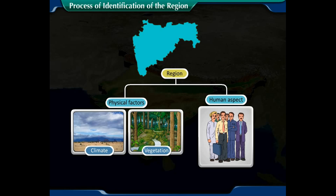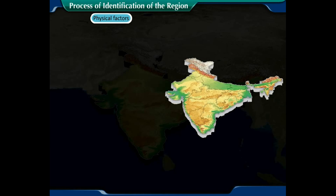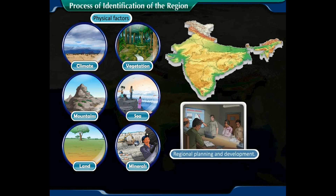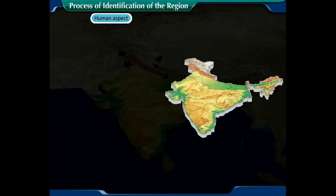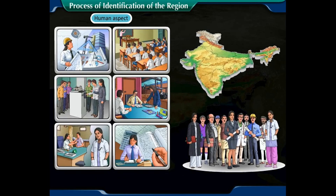These factors provide relative homogeneity, which becomes the foundation of the regional approach. Physical factors are relatively static compared to other factors and are fundamental for regional planning and development. The human aspect is also key — man is the driving force to develop the region through his vision and hard work.